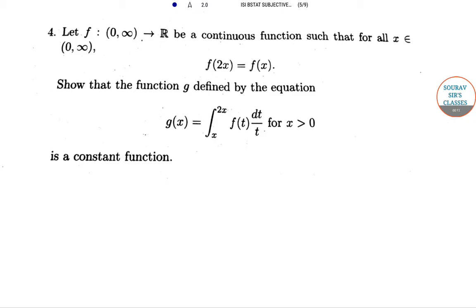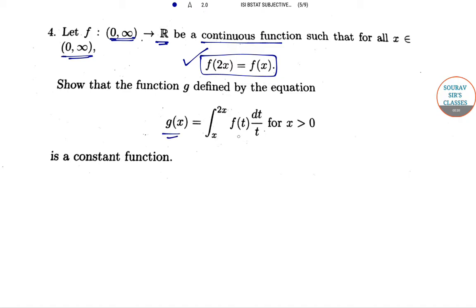In question number 4, what they have given is that f is a function from [0, ∞) to the reals, a continuous function such that for all x in [0, ∞), f(2x) = f(x) is also given. We need to show that the function g, defined by g(x) = ∫[x to 2x] f(t)/t dt, is a constant function.